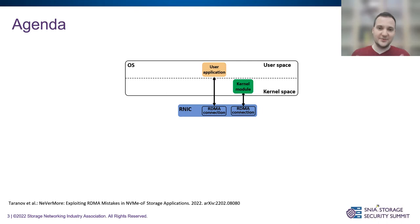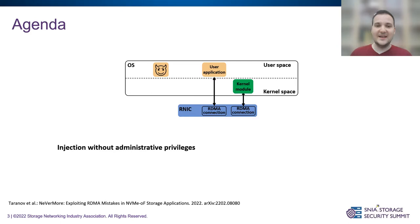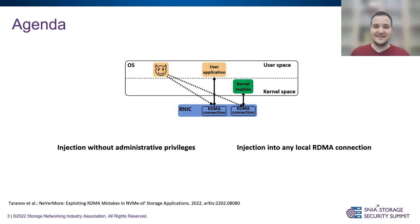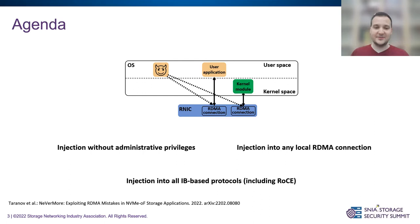What I'd like to show today is that in a setting where we have an operating system with user applications and kernel modules using RDMA, if we have an adversary with just normal user access on this operating system, it can actually impersonate any connection created by any user application — without administrative privileges. It can also impersonate kernel connections created by kernel modules, meaning it can send messages on behalf of those kernel modules. This vulnerability applies to all InfiniBand-based protocols, including InfiniBand as well as RoCE protocols.